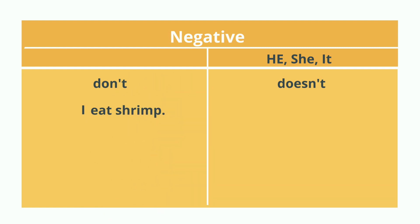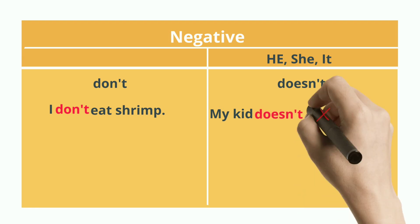I eat shrimp. To change that sentence into a negative sentence, I don't eat shrimp. What about my kid? My kid eats shrimp. But to change it to a negative one, My kid doesn't eat shrimp.